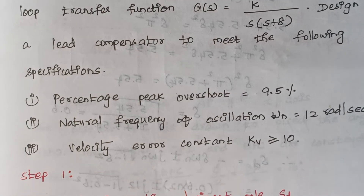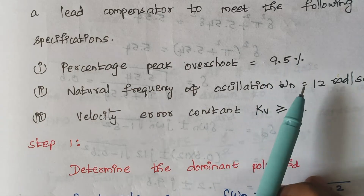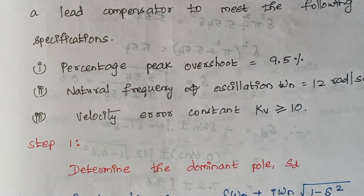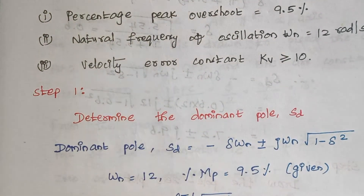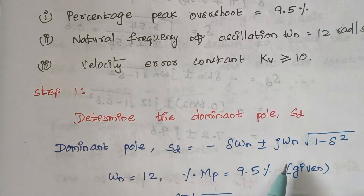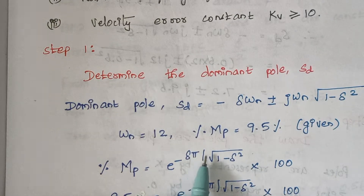The first step is to find the dominant pole sd. Here we are given with the details of peak overshoot and omega n. Using these values we are going to find the value of the dominant pole. The formula for dominant pole is given as sd equals minus zeta omega n plus or minus j omega n into root of 1 minus zeta square. The formula for peak overshoot is e power minus zeta pi divided by root of 1 minus zeta square, into 100.